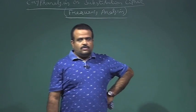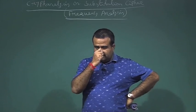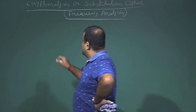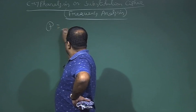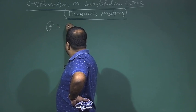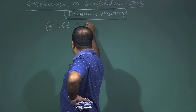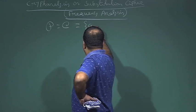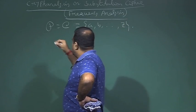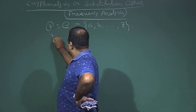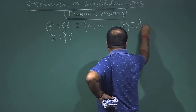We will talk about cryptanalysis on substitution cipher. We have seen the substitution cipher — the plaintext and ciphertext are sets of alphabets, and the key space is basically the set of all alphabets, denoted by A.